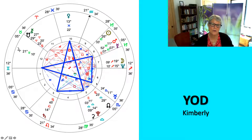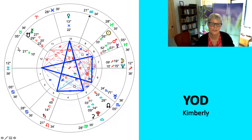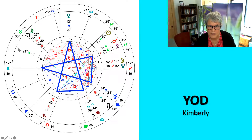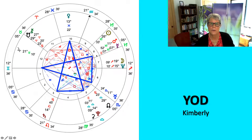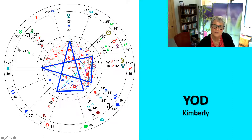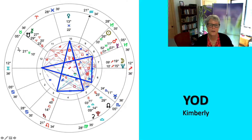Saturn in Leo in the third house reinforces a strong emphasis on communication. Mars conjunct Mercury intensifies this, and the importance of having the courage to speak up against institutional structures — possibly feeling fearful or disempowered around that, but the apex point says 'do it anyway.' Mercury is in balsamic phase to Mars, finishing up conditioning that holds back her voice, and envisioning how she can speak and communicate in ways that serve her soul and build her intellectual self-confidence.